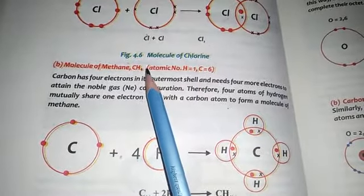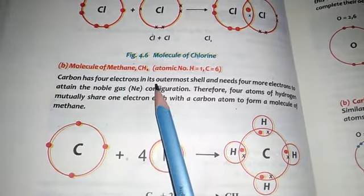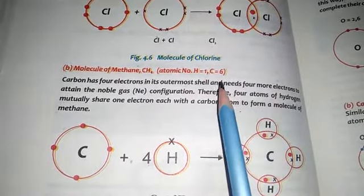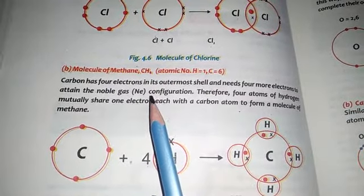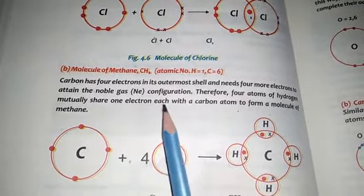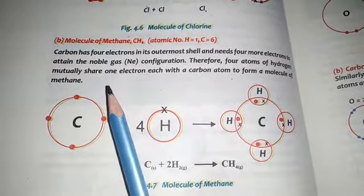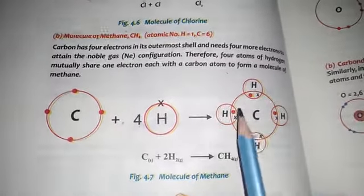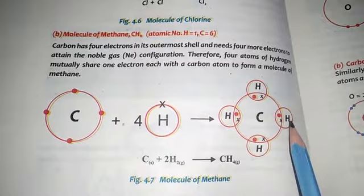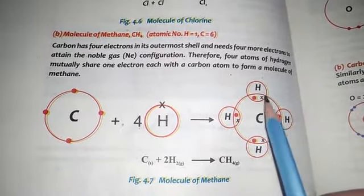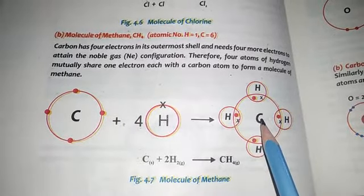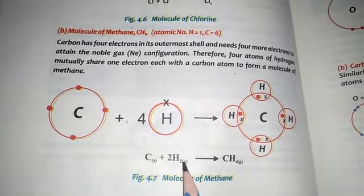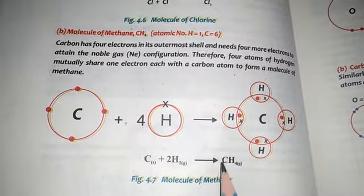The next example is the molecule of methane. Carbon has four electrons in its outermost shell because it is present in group four, so it needs four more electrons to attain the inert gas electronic configuration of neon. Therefore, four hydrogen atoms mutually share one electron each with the carbon atom to form the methane molecule CH4. This is the carbon atom; when it combines with four hydrogen atoms, carbon shares its electrons with hydrogen and hydrogen also shares its electrons with carbon in order to complete their octets. Carbon has a valency of four, so it can bond with four hydrogen atoms.